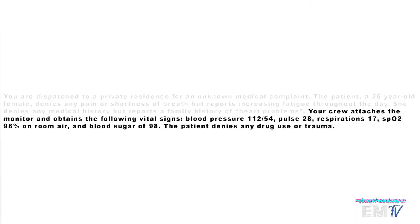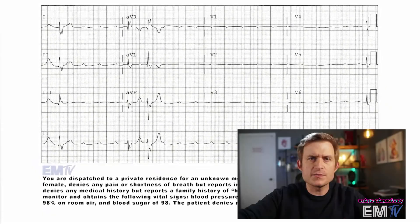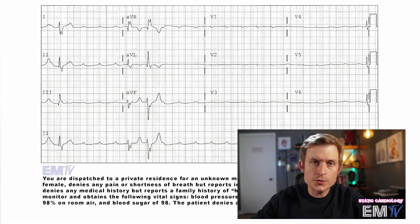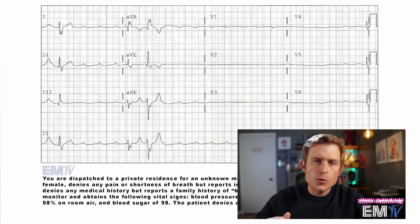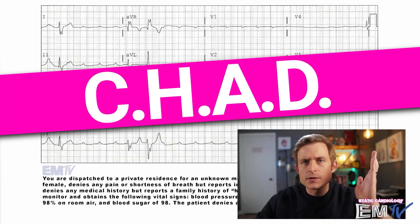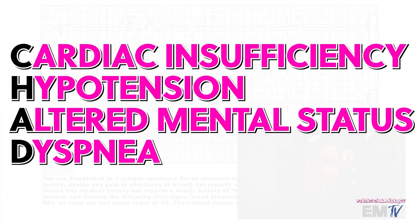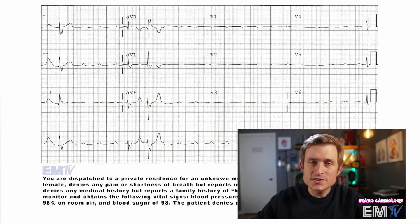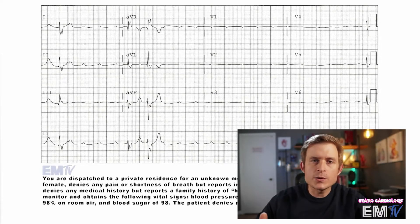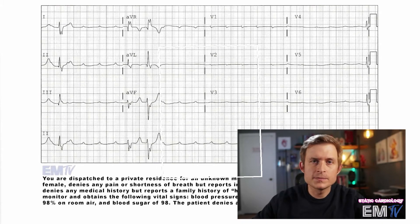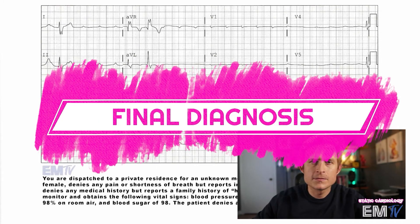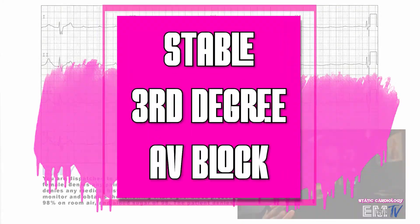The patient further denies any drug use or trauma. As the vast majority of your points in static cardiology are scored through correct treatment, we must first determine if the patient is stable or unstable and then follow that ACLS algorithm. For unstable criteria, I use the acronym CHAD, which stands for cardiac insufficiency, hypotension, alteration of mental status, and dyspnea. Now although this patient's pulse is 28, based on her other vital signs — particularly her blood pressure — and the fact that she's not altered in any way, nor is she complaining of shortness of breath or exhibiting hypoxia, my final diagnosis for static cardiology would be a stable 3rd degree heart block.